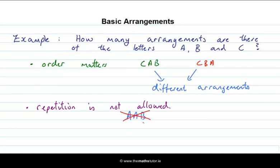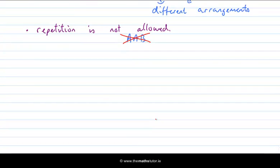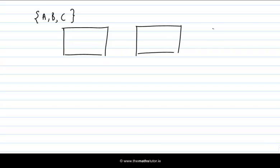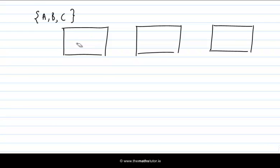Our basic device for counting here is the fundamental principle of counting. We have the letters A, B, and C, and we want to arrange them in a list. Let me draw three boxes so we can think of our arrangement as a way of putting the three letters into these boxes — the first letter goes in the first box, the second letter in the second box, and the third letter in the third box. When we come to the first box, we can choose any of the three letters, so we get three choices.